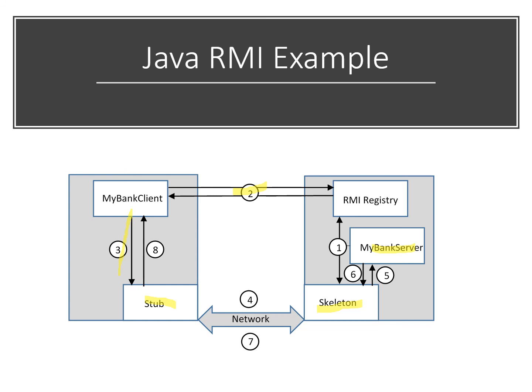The stub's job is to transform the call into a format amenable to passing across the network — this is called marshalling of the request. The request is then marshalled across the network to the skeleton, which receives it, recognizes it as a call for the MyBankServer, and unmarshals the network packet data into a valid call to the server objects. The skeleton then waits for the response from the server, marshals the results back across the network to the stub, which unmarshals the network packet data into the return values expected by the client.